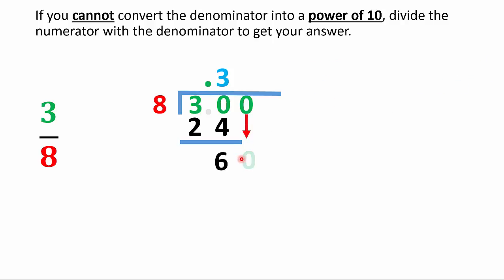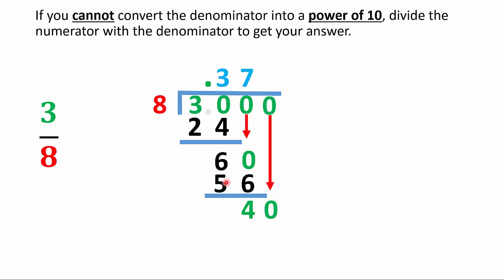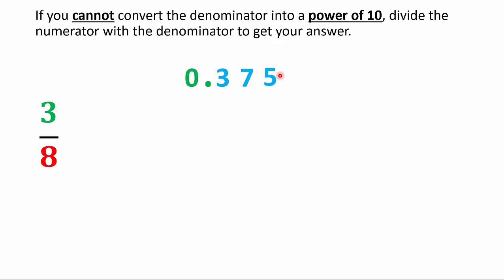We're not done — we need to keep going. Add a zero and drop it down: now we have 60. 8 goes into 60 seven times because 7 times 8 is 56. Subtract: 60 minus 56 is 4. Drop another zero to get 40. 8 goes into 40 five times exactly, remainder zero. Our answer is 0.375 — three hundred seventy-five thousandths.